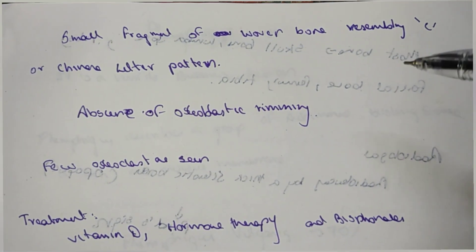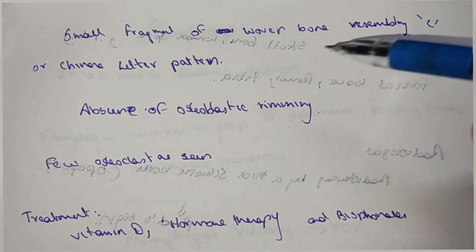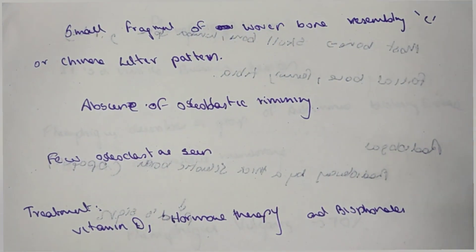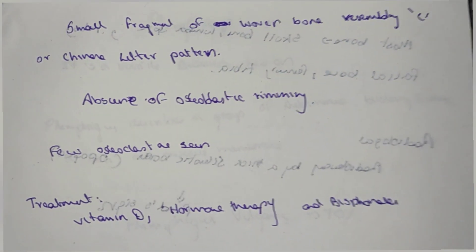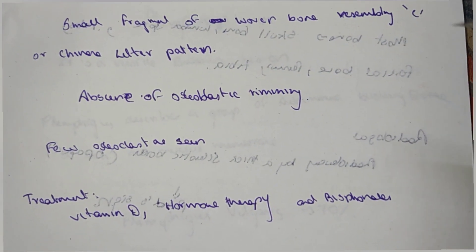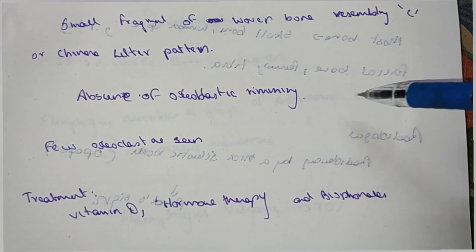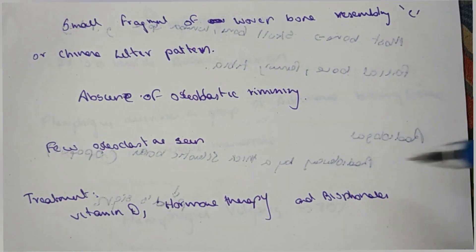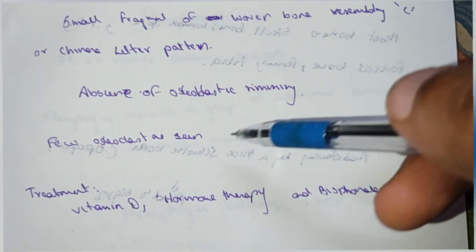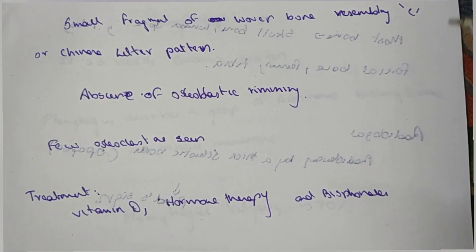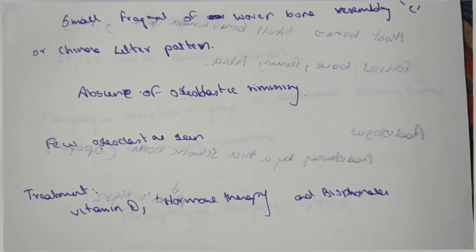Histologically, small fragments of woven bone resemble C-shaped structures. There is an absence of osteoblast rimming, meaning osteoblast trimming is absent. There are also very few osteoclast cells present.